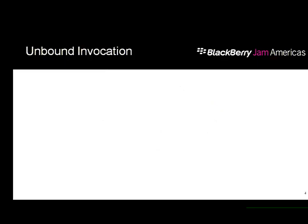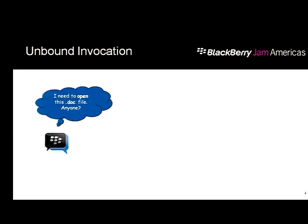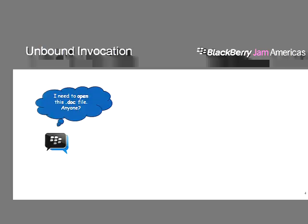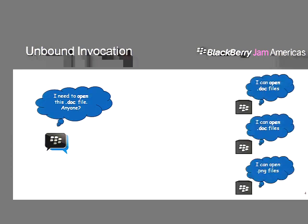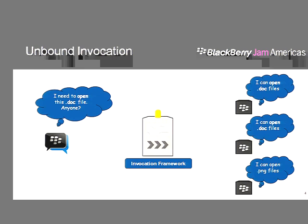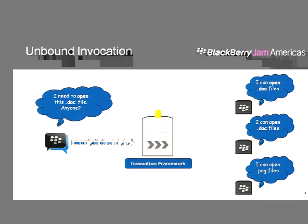I'd like to put forward a hypothetical example to visualize how the Invocation Framework works. If BBM tries to open a doc file, it doesn't know which apps on the device can open it. BBM can't do it, so it wants to invoke somebody. That's where the Invocation Framework comes in — it allows BBM to request the framework to open a doc file, and the framework does a little magic, finds the right target, and invokes it with the content it needs to render.